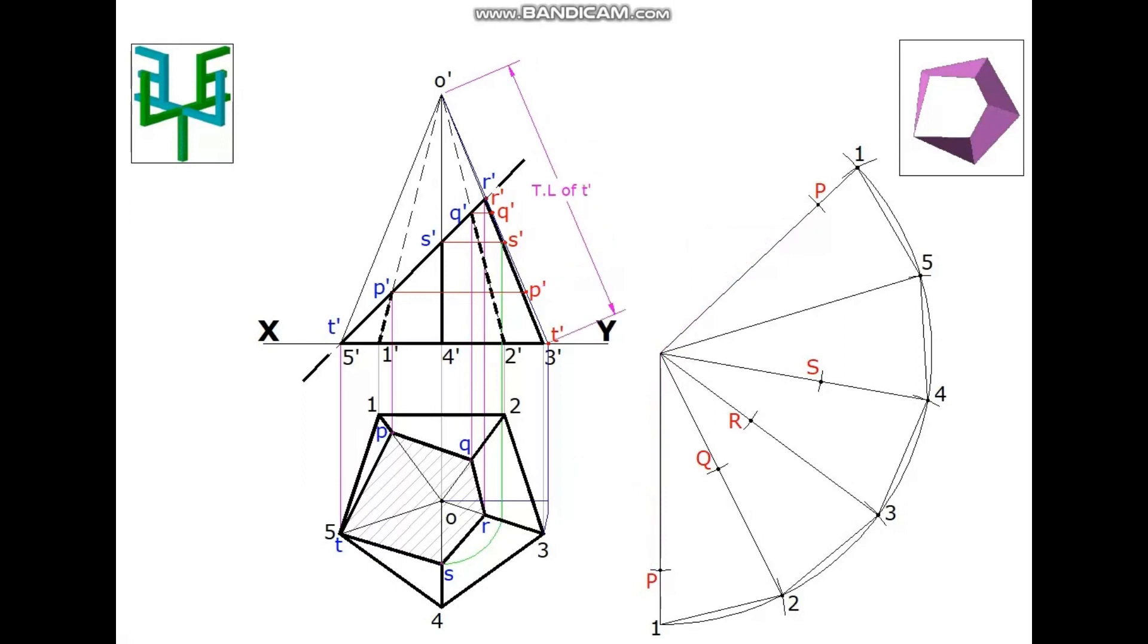True length of T' can be directly marked on point 5. Join this point with straight dark lines. Darken the base edges and the required portions of the slant edges, also finally show the dimensions.